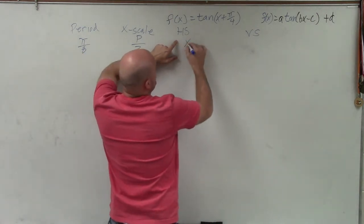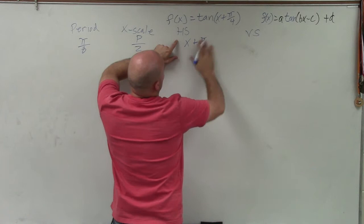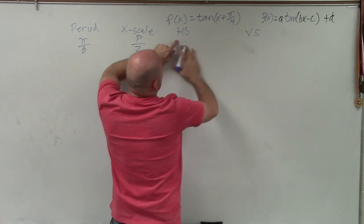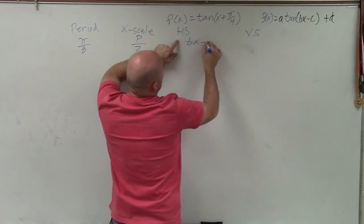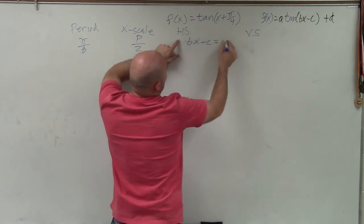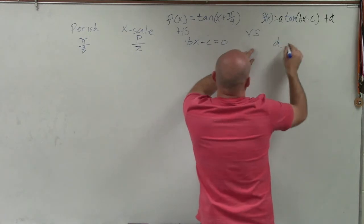Horizontal shift is going to be Bx minus C equals 0. And vertical shift is going to be D.